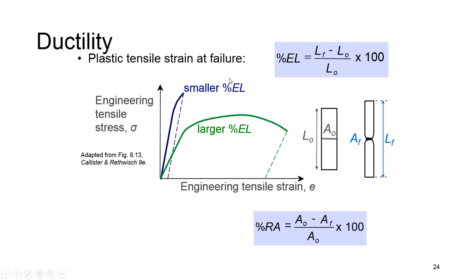Ductility can also be defined using percent elongation, defined as (LF - L0)/L0 × 100, where LF is the final length and L0 is the initial length, or by percent reduction in area, where A0 is the initial area and AF is the final area. For both cases, this value is positive. The higher value of percent reduction in area or percent elongation shows the material is more ductile.